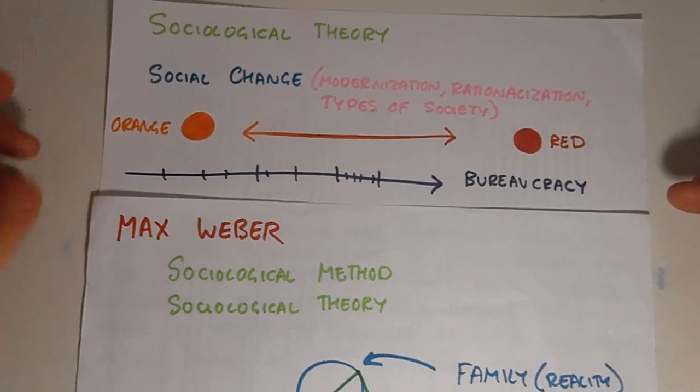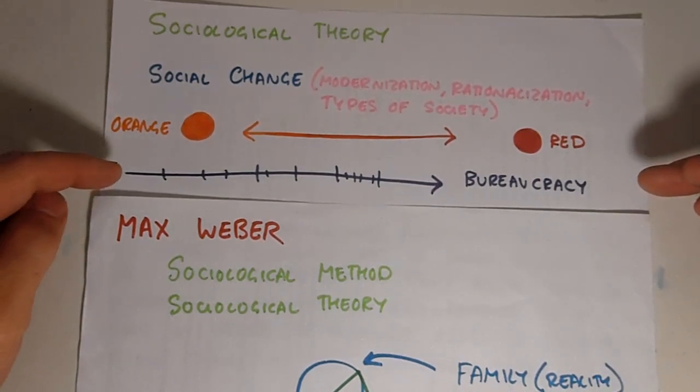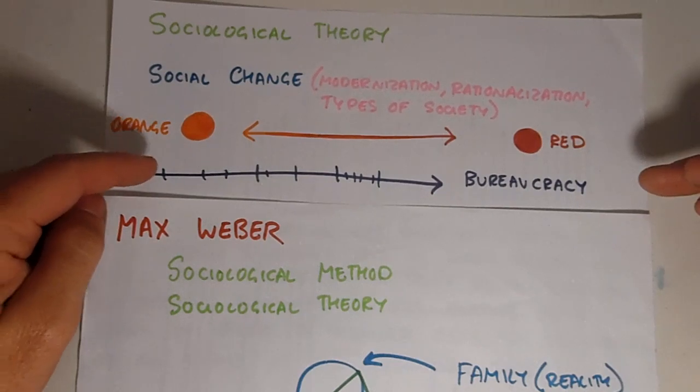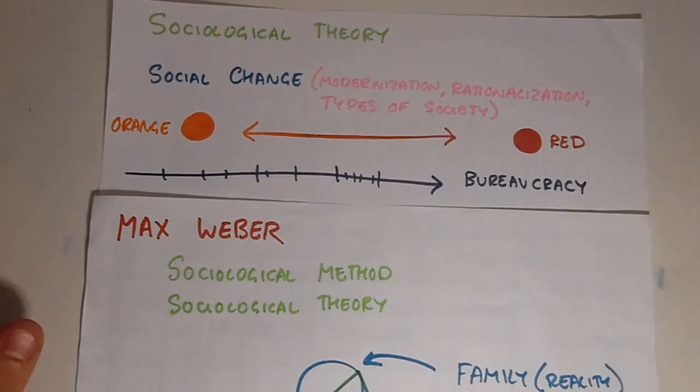So Weber looked around and he saw these changes and he saw new kinds of institutions developing. And from them, he developed this concept of the bureaucracy. And by doing so, it allowed him to look at how societies changed and moved along this spectrum and became more rational, more bureaucratic, more modern.